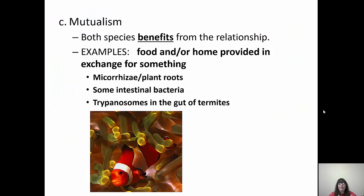Mutualism is when both species benefit. Mycorrhizae are fungi living in plant roots — they give plants more surface area for greater effectiveness, and in return the plants make food for the mycorrhizae. Some intestinal bacteria help with digestion and in return get a home. Trypanosomes in the guts of termites, sea anemones and clownfish are other examples. Lichen is a mutualistic relationship between algae or cyanobacteria and a fungus — the algae photosynthesize to make food for the fungus, and in return the fungus provides a home for the algae.